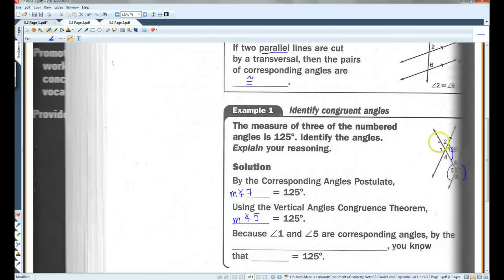And because angle 1 and angle 5 are corresponding angles, then these have to be 125 degrees. This is the corresponding angles postulate.